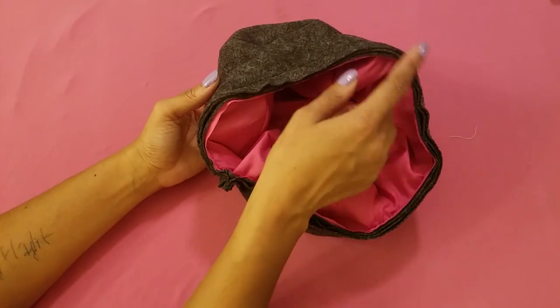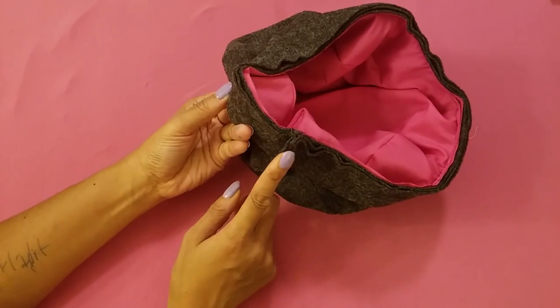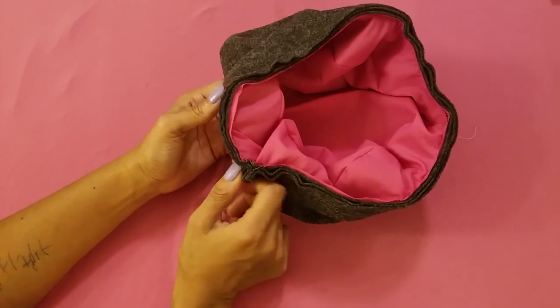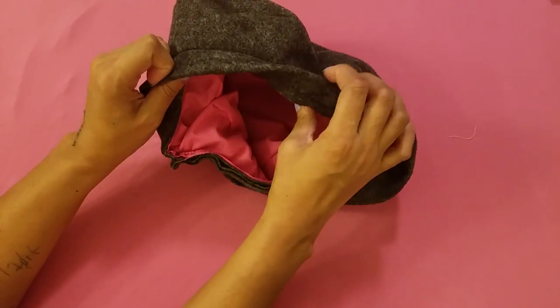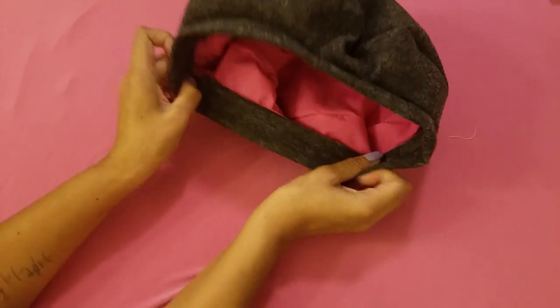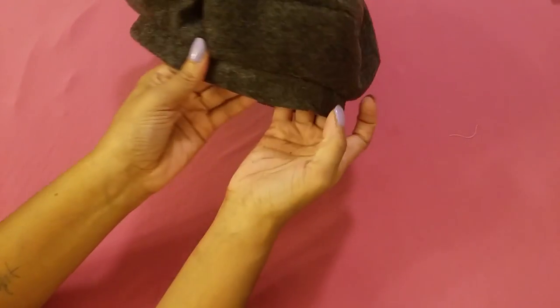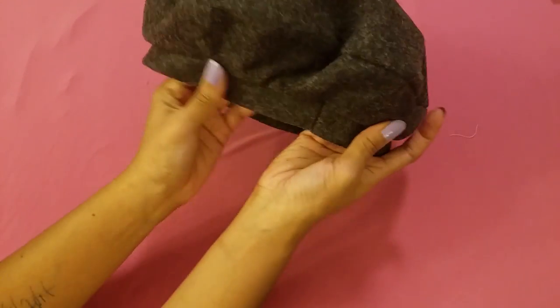If you would like, you can finish all of these raw edges here and here, or you can trim them down, or just leave them as is, because when you flip that right side out, all of those edges are going to be on the inside and you won't be able to see it from the outside of the beret.